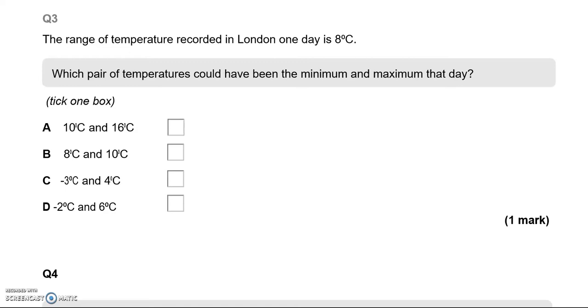Negative 3 and 4. Now, to get from negative 3 to 0 degrees Celsius, there's going to be 3 of them. And to get from 0 to 4, it would be 4 degrees. 4 and 3 make 7. So that's not correct either.